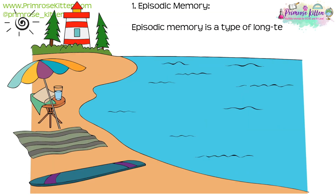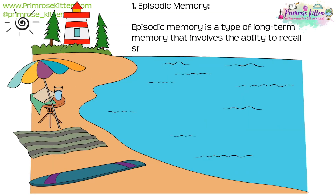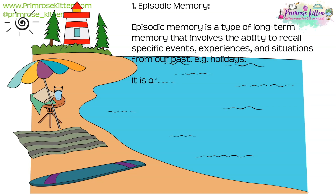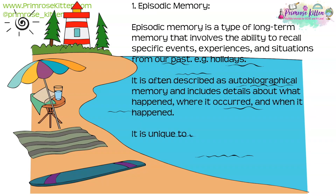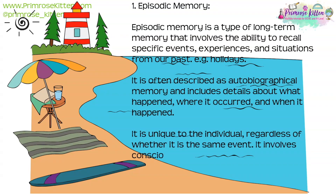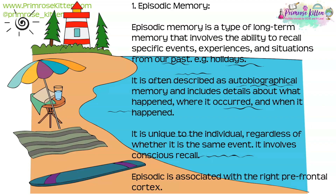1. Episodic memory. Episodic memory is a type of long-term memory that involves the ability to recall specific events, experiences and situations from our past. For example, holidays. It is often described as autobiographical memory and includes details about what happened, where it occurred and when it happened. It is unique to the individual, regardless of whether it is the same event. It involves conscious recall, and is associated with the right prefrontal cortex.